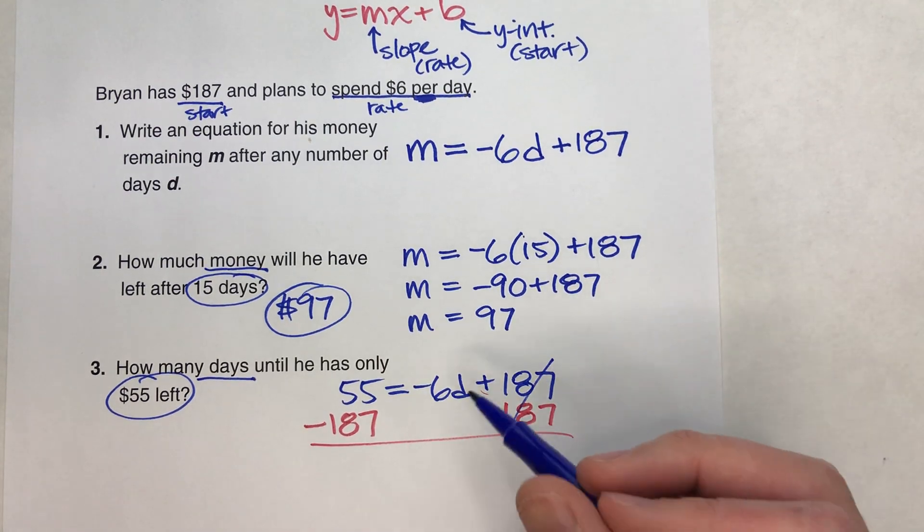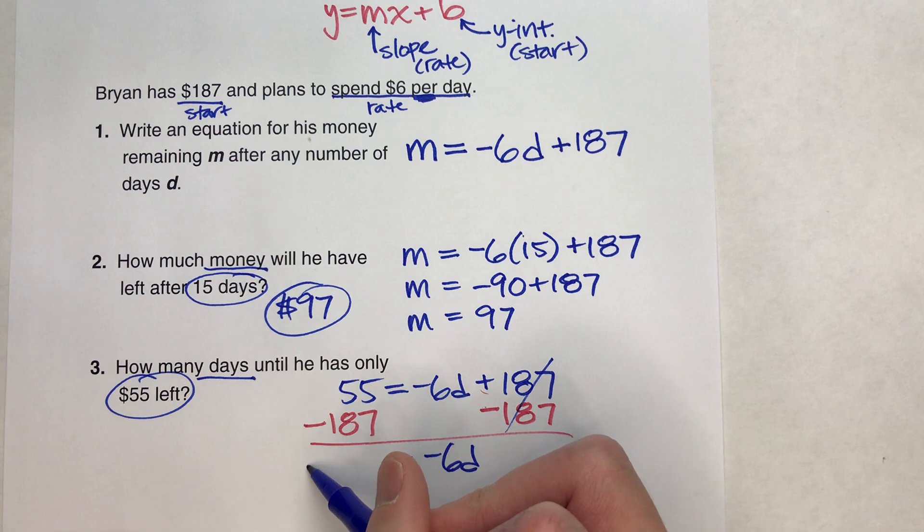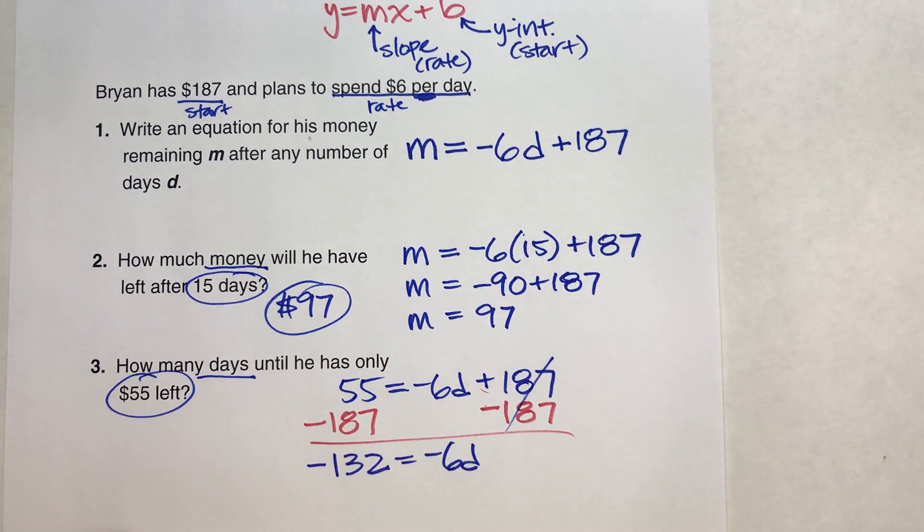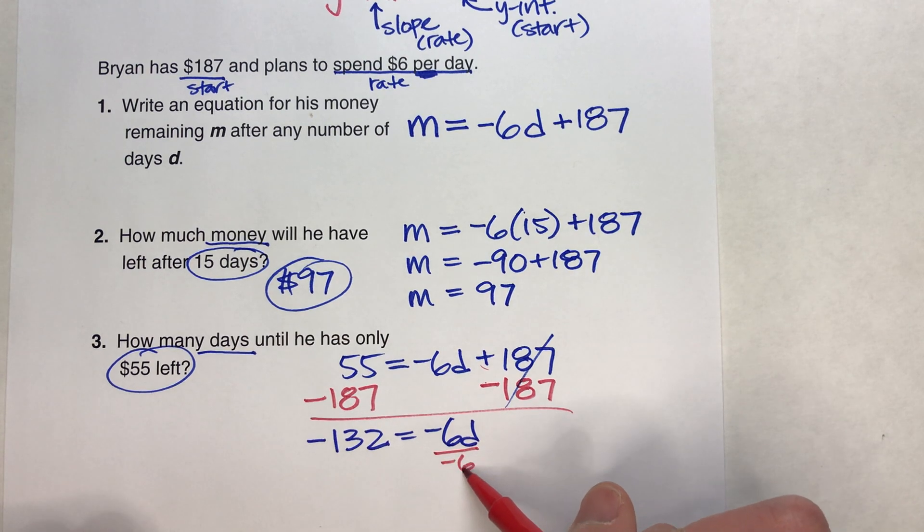When I do that, these undo each other. I get negative 6d. And over here, I get negative 132. And then to get d, I'm going to have to divide both sides by negative 6.